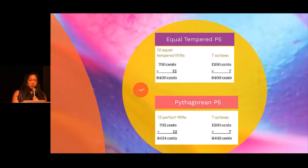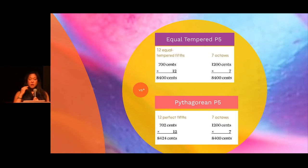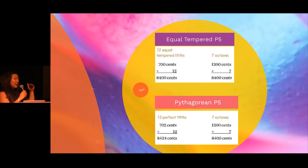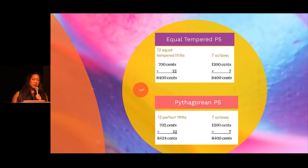Equal tempered perfect fifths: there are 12 equal tempered fifths. So 700 cents times 12 gives us 8,400 cents. Twelve equal tempered fifths will hit all the half steps, and it covers seven octaves when you jump in perfect fifths. So 1,200 cents times 7 gives us 8,400 cents. The math looks very clean on that equal tempered chart. But then we go to the Pythagorean perfect fifths, and we have 702 cents, which is going to ruin the math.